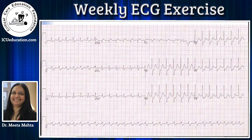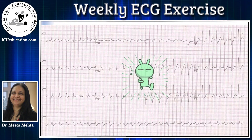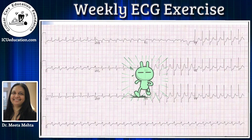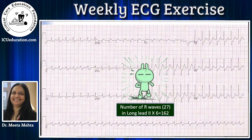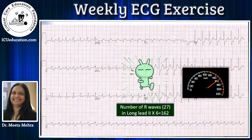This was her ECG on admission. Hit the pause button, write down your findings, and resume the video again. If you look at this ECG grossly, it looks very fast — there is a tachycardia which looks absolutely regular. We count the number of R waves in long lead 2 and multiply by 6. Here they are 27, so multiplying by 6 gives 162. This QRS complex is running at a rate of 162 per minute — a tachycardia that is fast, regular, and narrow complex.